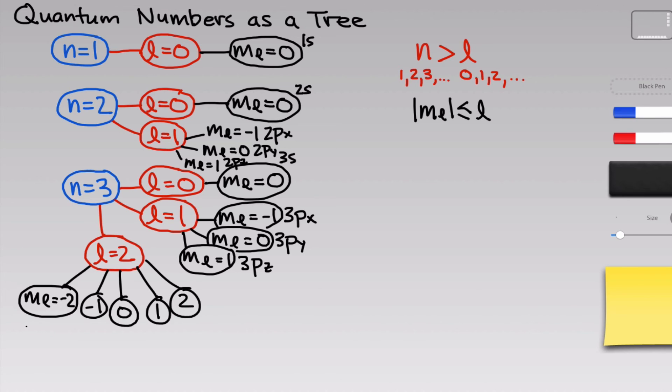And these are what we call the 3d orbitals. There are five of these, and they're called 3d xy, 3d yz, 3d xz, 3d x squared minus y squared, and 3d z squared. And again, even though it's not as simple as x, y, and z,